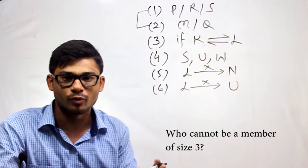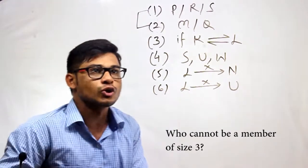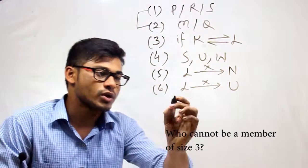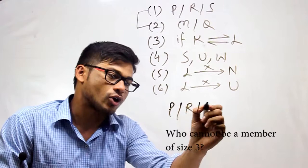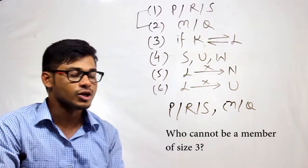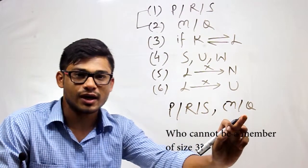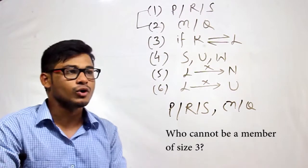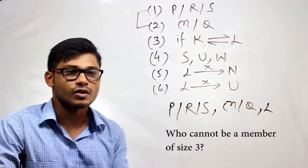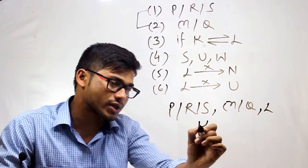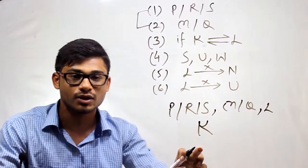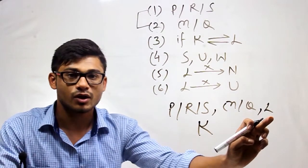Question four is: who cannot be a member of a team of size 3? When forming a team, condition 1 and condition 2 must be satisfied, so either P, R or S must be there, and one of M or Q must be there — that's at least two members. Looking at the options: when I choose L, from condition 3 I have to choose K as well. So there will be at least 4 members — meaning L cannot be a member of a team of size 3.